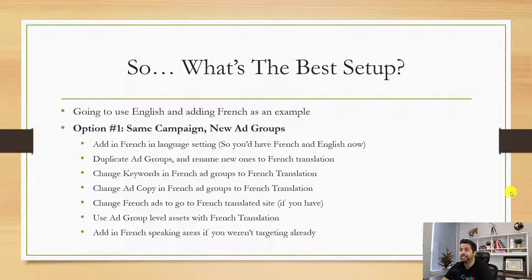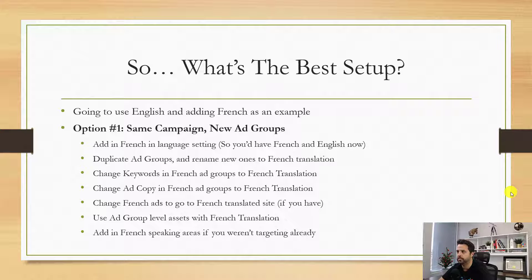Option one is using the same campaign, just adding in new ad groups. If we're using the same campaign, keep in mind we're not going to be able to separate things in terms of budget. Everything's going to be in the same campaign. The main pro I like is that all the data is in one campaign — it usually makes things simpler, we give Google data faster, especially if you're using automated bids and just trying to get the most leads for your budget without caring whether they come from English or French. Then the same campaign is best.